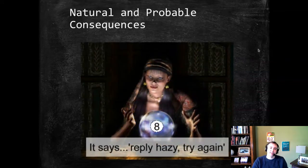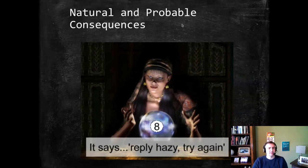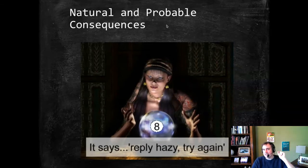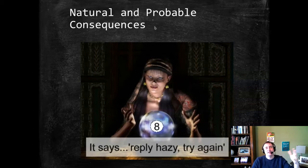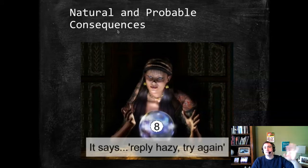The other common law rule, now a minority rule, is called natural and probable consequences. I want to point out this is the name of the rule, not the standard — students often want to use it as the standard, but the actual standard is 'reasonably foreseeable at the time of a prior criminal relationship.' That's the test: reasonably foreseeable at the time of a prior criminal relationship.